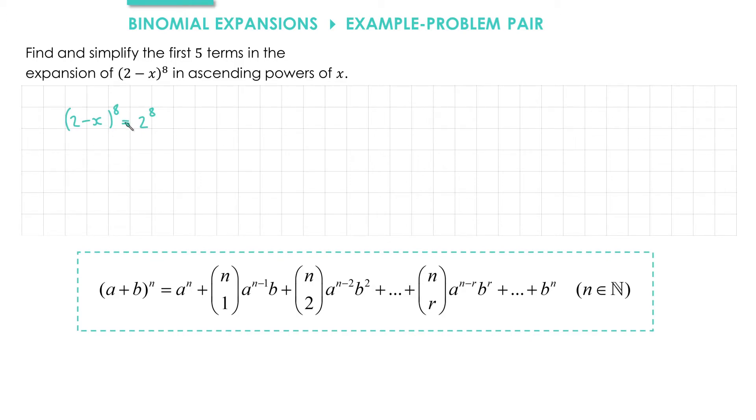So because the power is 8 here, that's n in the formula down here. So we're going to do 8 choose 1, 8 choose 2, and so on.